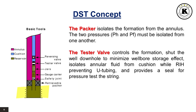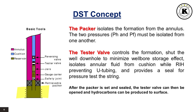The tester valve controls the formation, shuts the well downhole to minimize wellbore storage effect, isolates annular fluid from cushion while running in hole preventing U-tubing, and provides a seal for pressure testing the string. After the packer is set and sealed, the tester valve can then be opened and hydrocarbons can be produced to surface. This will occur only if PC is less than pH.